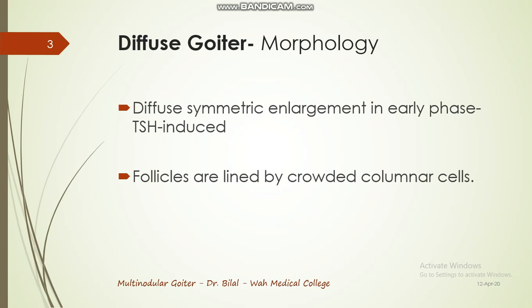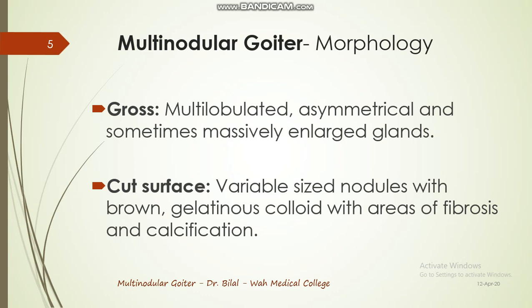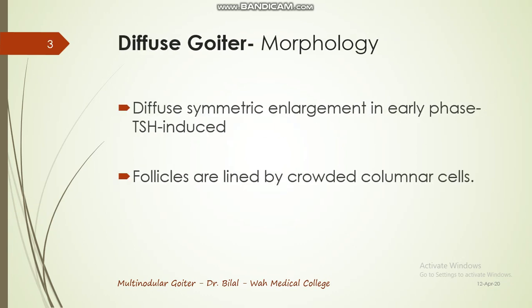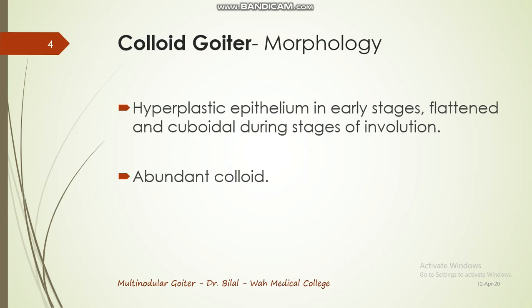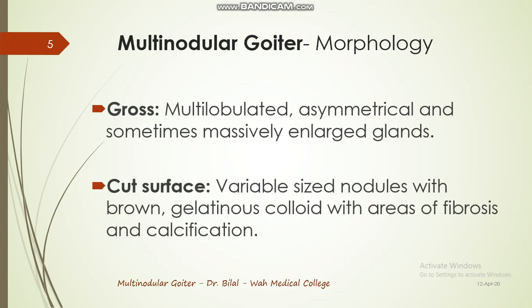The kind of question you may be asked, particularly with respect to an OSCE, you may be given a gross picture or a microscopic picture. To understand that, you need to remember that morphologically there are three varieties of goiter: diffuse goiter, then colloid goiter, and multinodular goiter. These three can be looked upon as a continuum of each other.